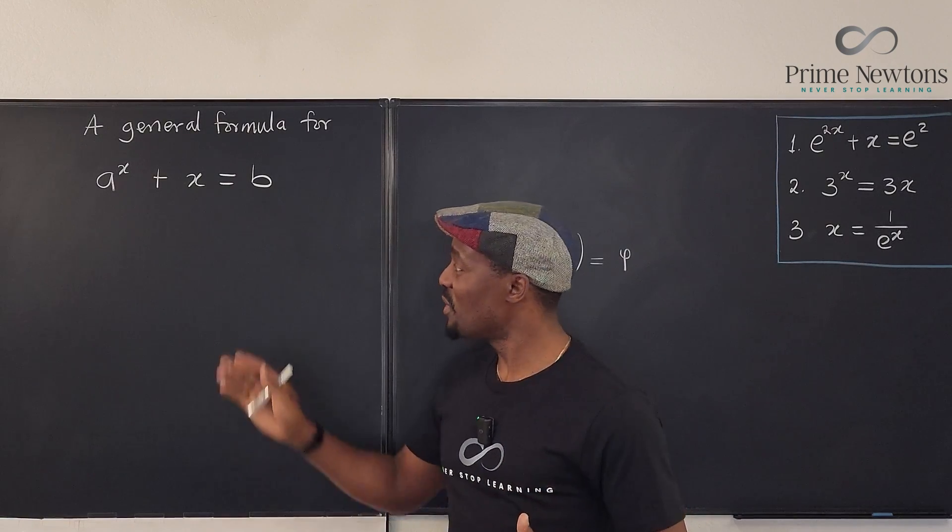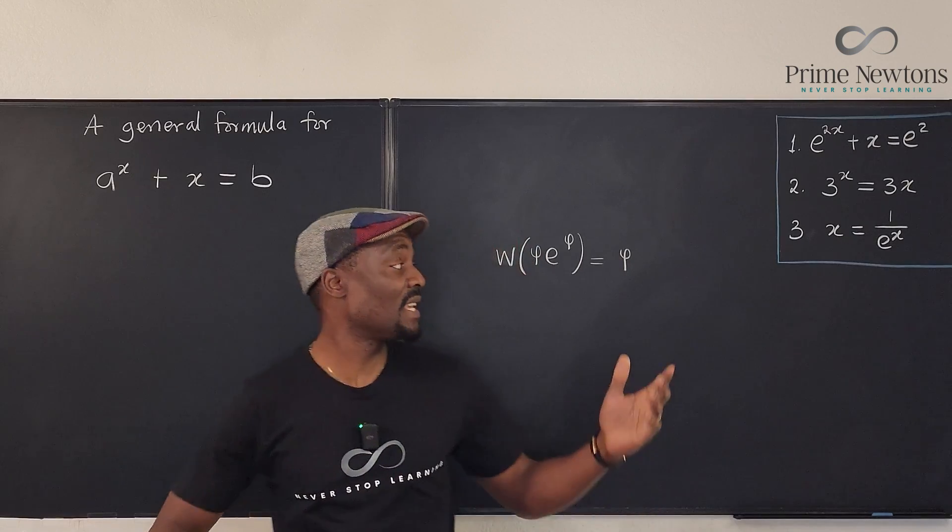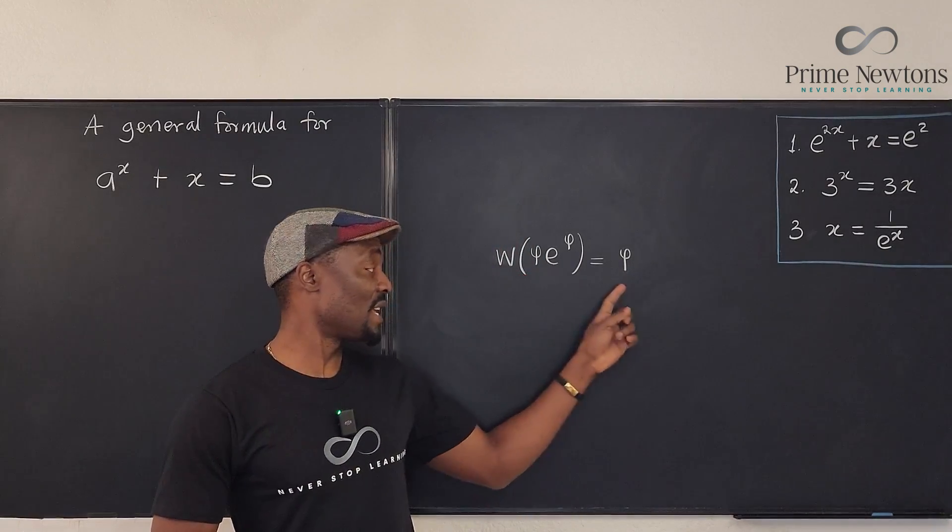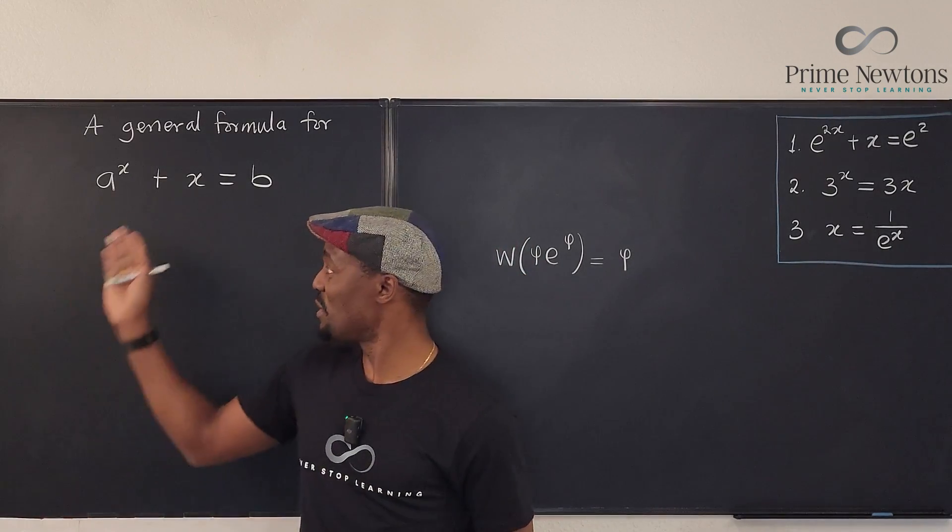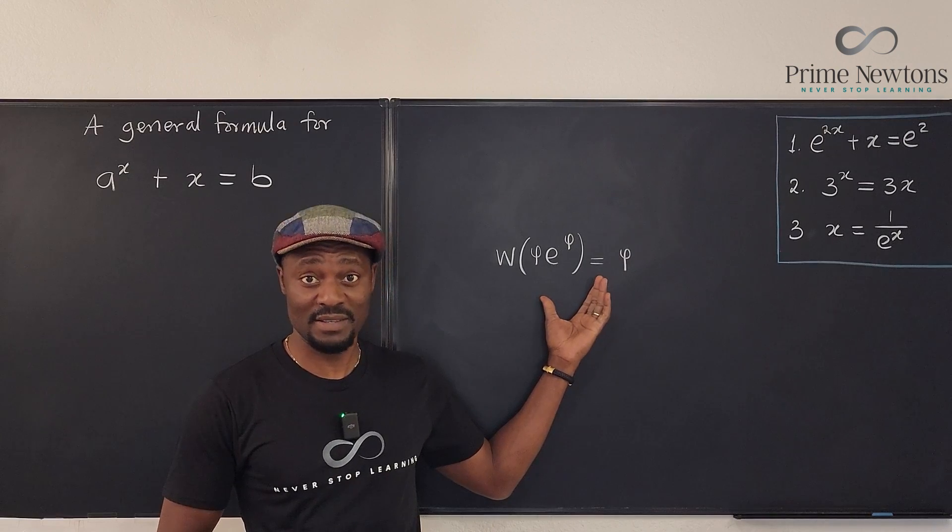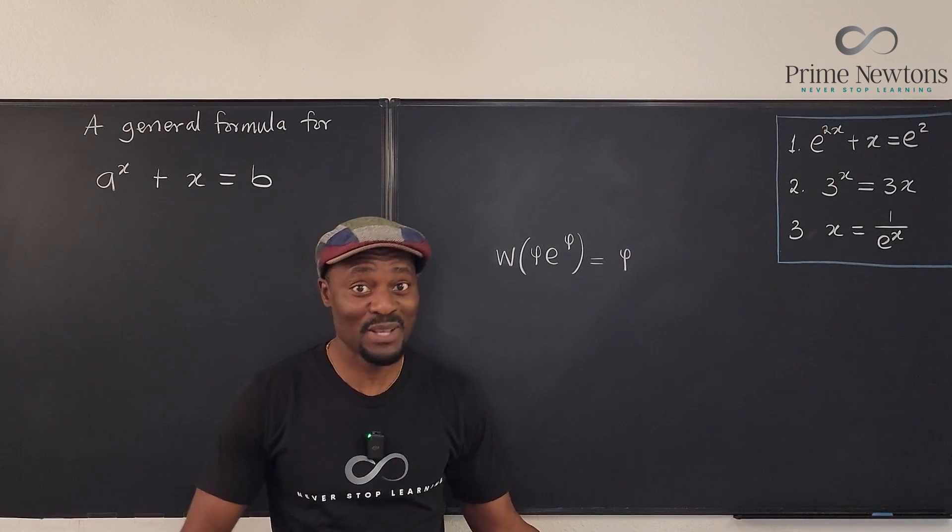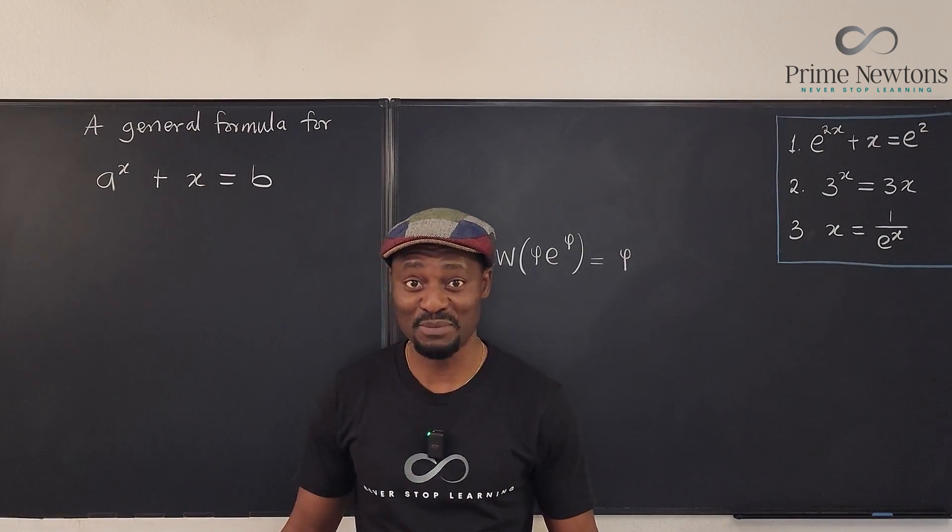So our first mission is to rewrite this expression so that we can get something like this and then we can solve it this way. So we have to rewrite this to look somehow like this. That's the fun of it because then you can do all kinds of algebraic manipulations.